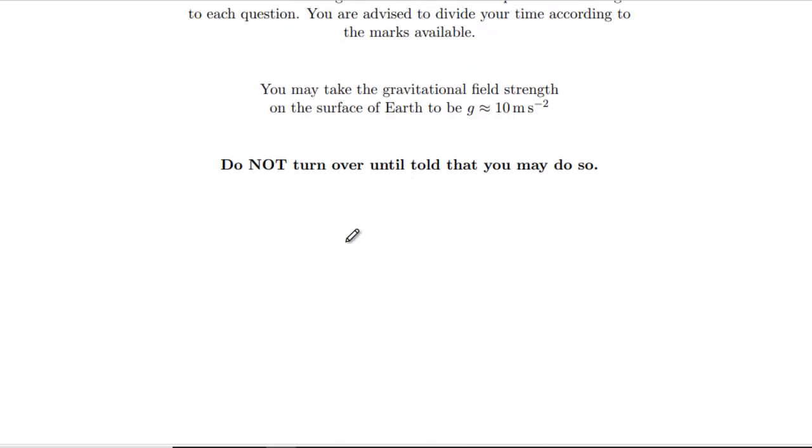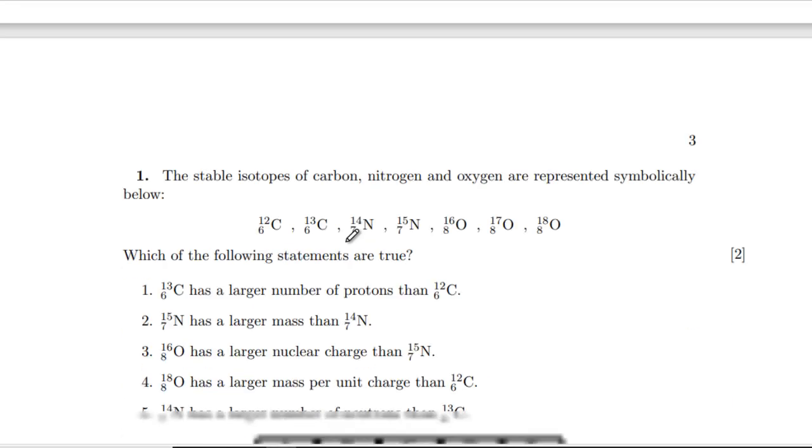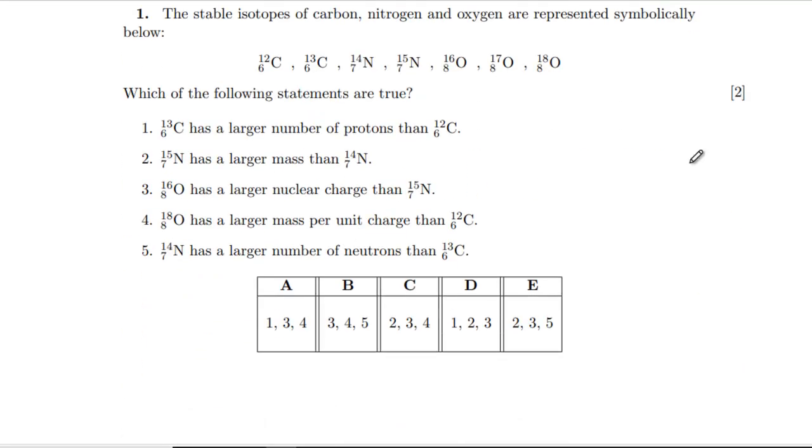Question one: stable isotopes of carbon, nitrogen, and oxygen are all of those seven options. Which of these are true? Carbon-13 has a larger number of protons than carbon-12? Well no, they've got the same number. That's why they're both carbon. Does nitrogen-15 have a larger mass than nitrogen-14? Yep, it's got an extra neutron.